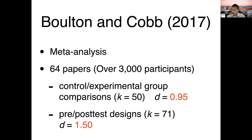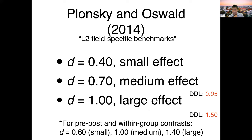Bolton and Cobb's meta-analysis verified these claims from previous DDL studies. Meta-analysis is a secondary research methodology that statistically combines research outcomes called effect sizes. Bolton and Cobb synthesized effect sizes from 64 DDL studies from 1989 to 2014, with a total sample size of over 3,000. They reported that for control-experimental group comparisons across approximately 50 studies, the combined effect size was 0.95, and for pre-post designs it was 1.5 — both suggesting DDL is effective and results in considerable gains. These are medium-to-large effects based on Plonsky and Oswald's benchmarks for L2 field-specific effect sizes.